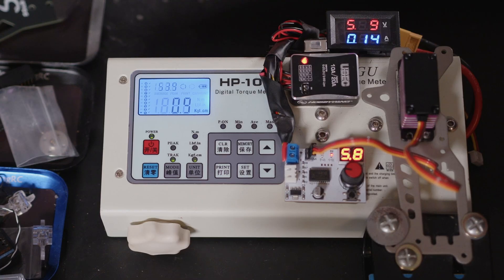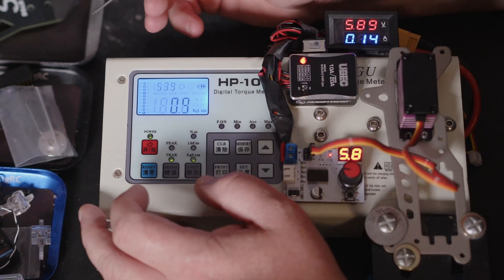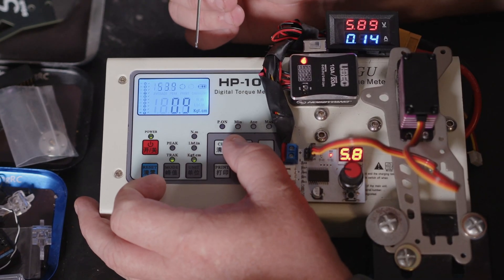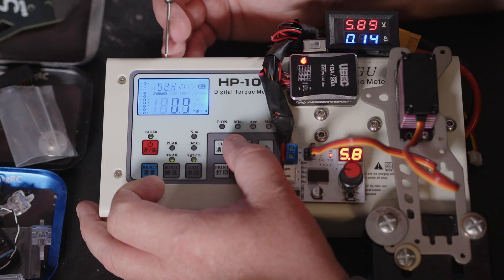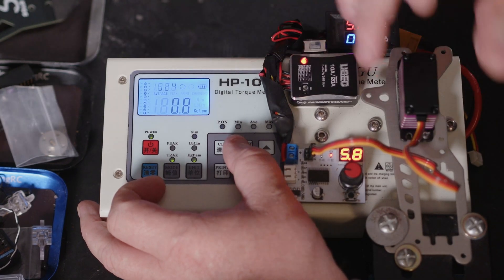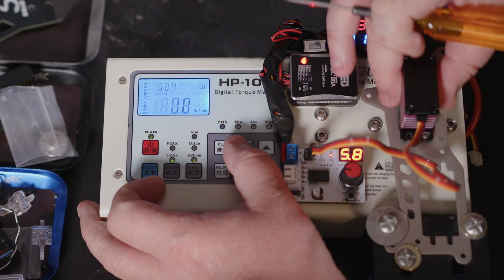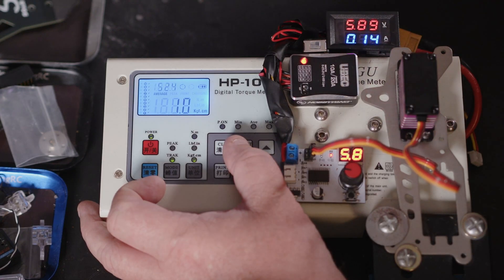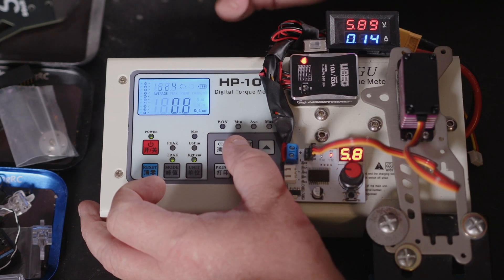Let's have a look, see if we can get an average. We're getting an average of 10 pulls of 52.4 kilograms. The servo at that is stone cold, so yeah, quite impressed with that.